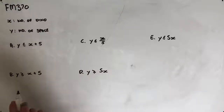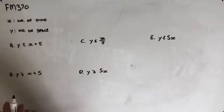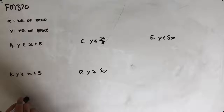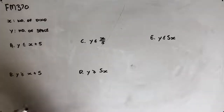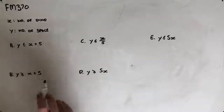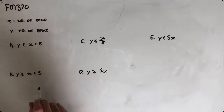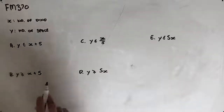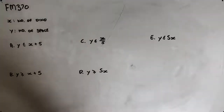Welcome to question FM370 of the Further Maths Fortify Study Guide. This question reads: for a particular museum, management has put in place a rule that says there must be at least one dinosaur exhibition for every five space exhibitions. Let X be the number of dinosaur exhibitions and let Y be the number of space exhibitions. The inequality for this constraint is one of five given options.